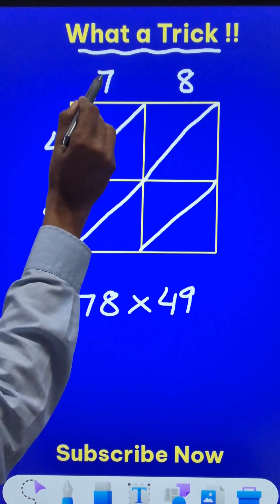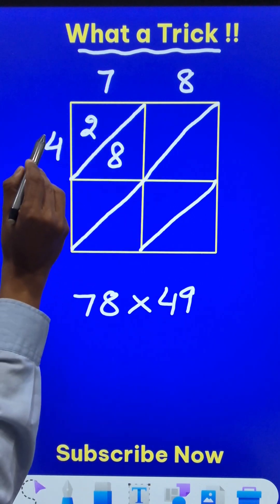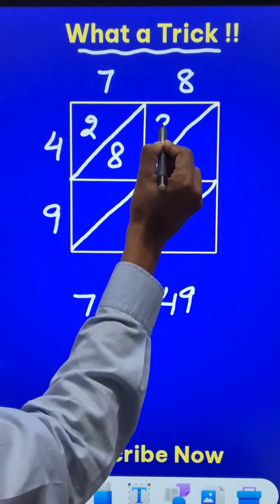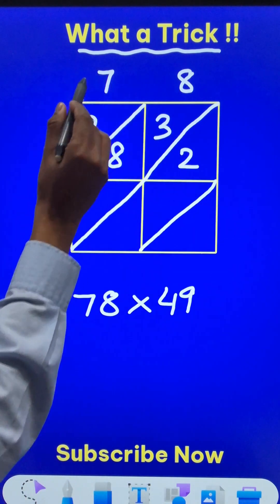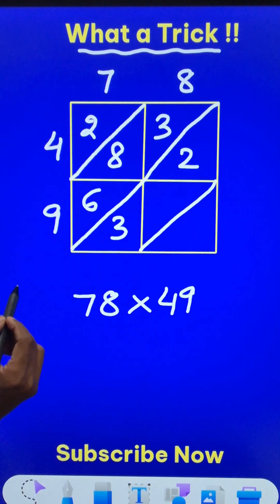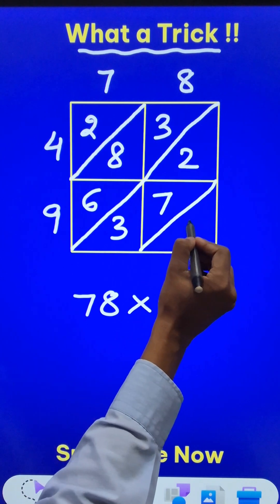Now, I will do 4 times 7 which is 28. I will write 28 like this. 4 times 8 which is 32, I will write 32 like this. Likewise 9 times 7 is 63, I will write 63 here. And 9 times 8 is 72, I will write 72 here.